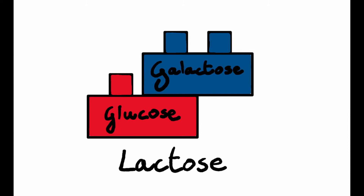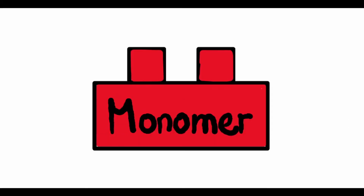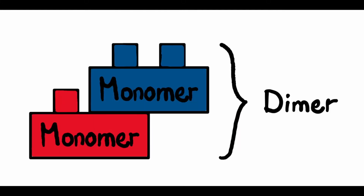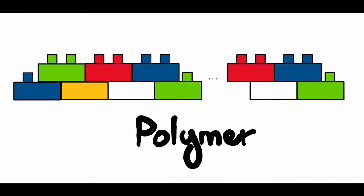Milk contains lactose. Lactose is a dimer, meaning it is made out of two subunits, two monomers. Imagine it like a lego — one piece is a monomer. You put two pieces together and you get a dimer. Similarly, with multiple pieces, let's say a thousand, you create a polymer.